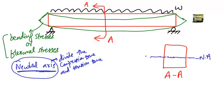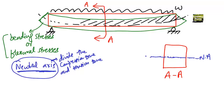How can we say where the compression zone is and where the tension zone is? We know the load is acting from the top of the beam. If I draw the neutral axis in this bent beam, the top region has been compressed because of the load, and concrete is going to take this compression. So this top region is in compression — we call it C.